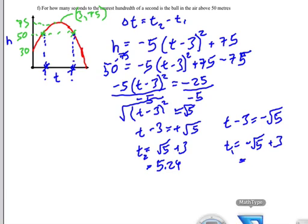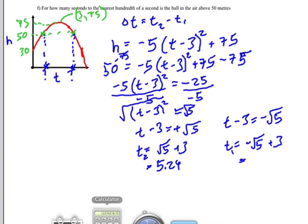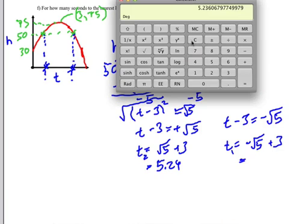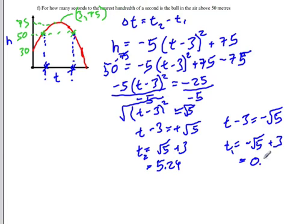Going back to our calculator, it will be square root of 5, and we're going to change that to negative, and put in plus 3. The first time that it reaches the 50 meter mark will be at 0.76 seconds. And that will be our T₁.